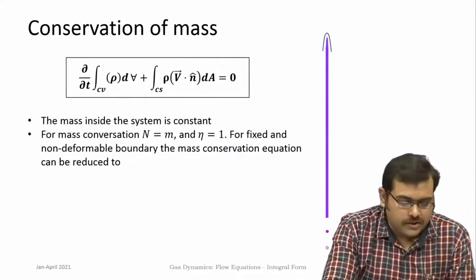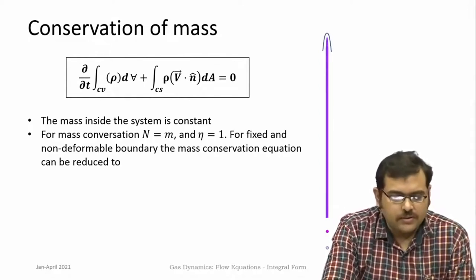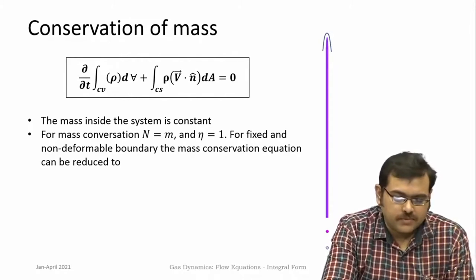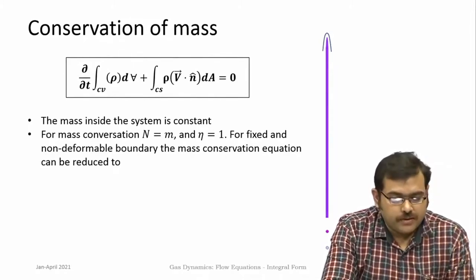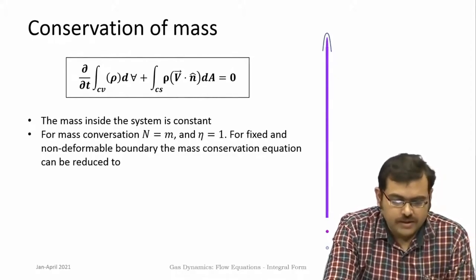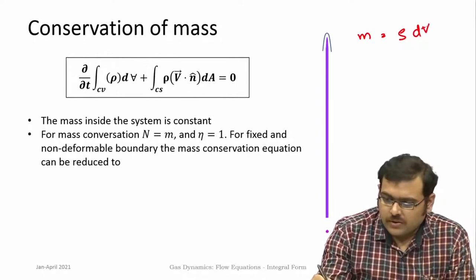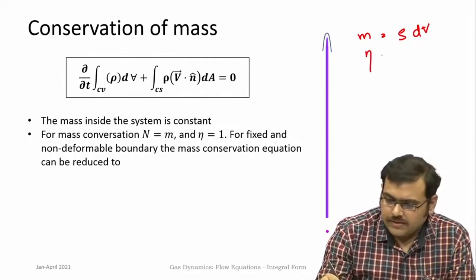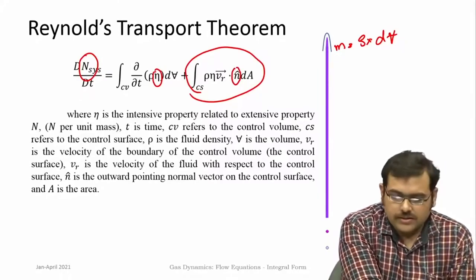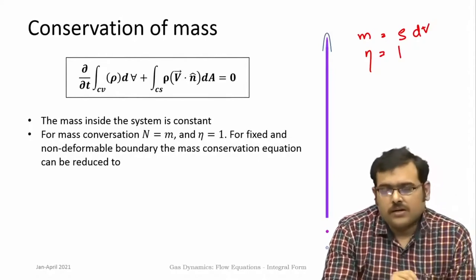Let us look at different conservation laws for fluid flow systems. The first is conservation of mass. The total mass within the system is conserved — mass does not change. What we need to do is apply the Reynolds transport theorem and find out what the intensive quantity is. In this case, the mass of the system is given by density multiplied by volume, so the value of that intensive property eta is 1. If you apply the Reynolds transport theorem with eta equal to 1, you get the equations for conservation of mass.